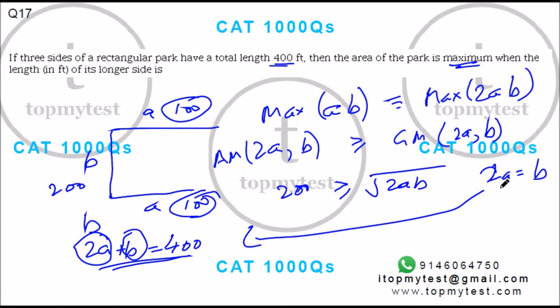So the maximum area will happen when 2ab is maximum. If 2ab is maximum, then ab will also be maximum, which is the area. And that happens when B is equal to 200. The longer side, B, is obviously the longer side since B is greater than A.